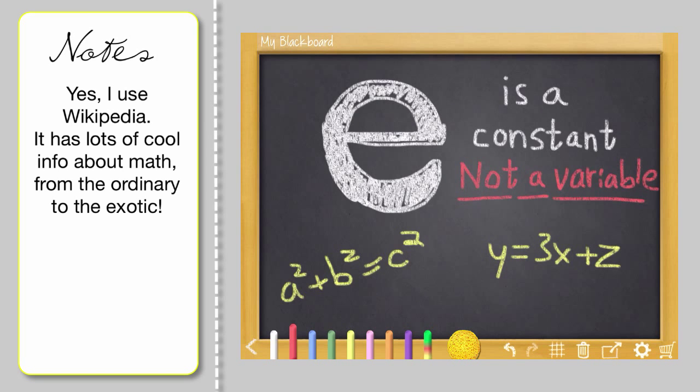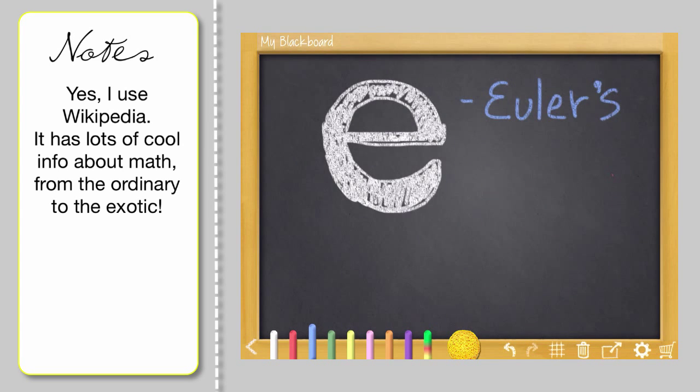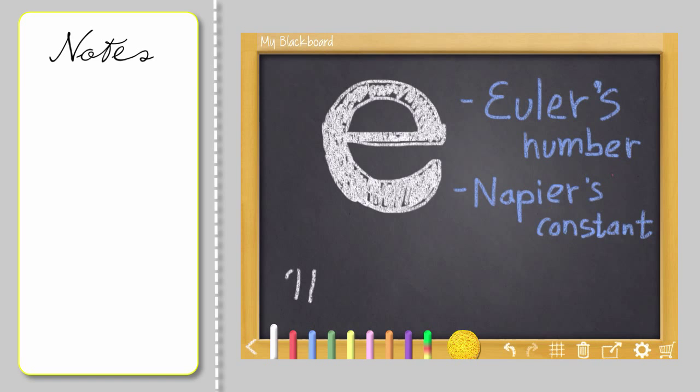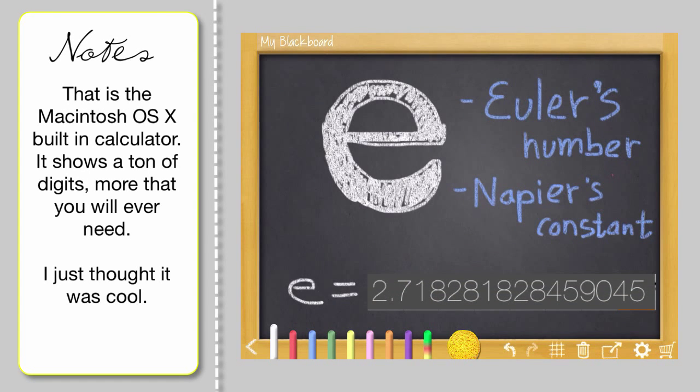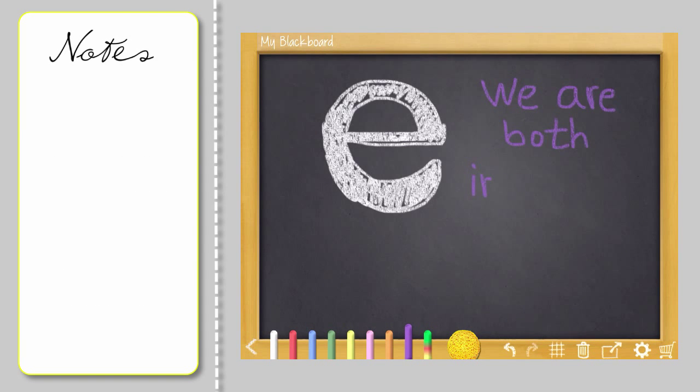I looked on Wikipedia and I found that it's sometimes called Euler's number or Napier's constant. And E is a constant, just like the Greek letter pi stands in place of the number 3.14159, on and on and on. E stands in place of 2.718281828459045, on and on and on. So also similar to pi, it's an irrational number. The decimal just keeps going on forever.